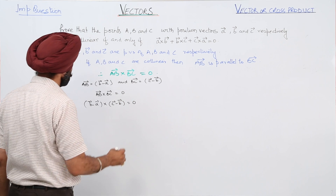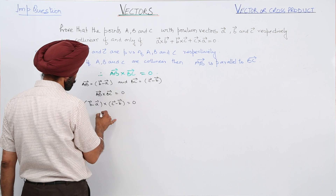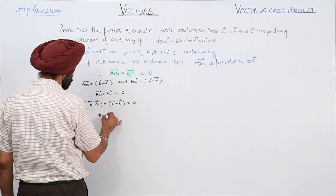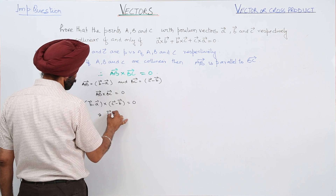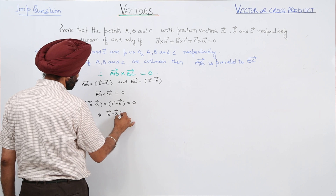Now, vector B minus vector A cross vector C minus vector B is equal to zero.